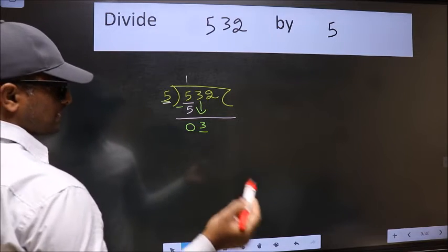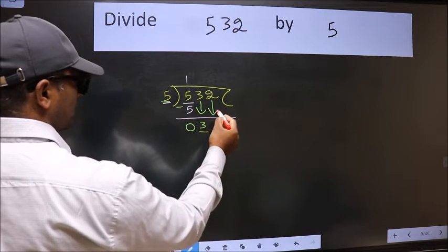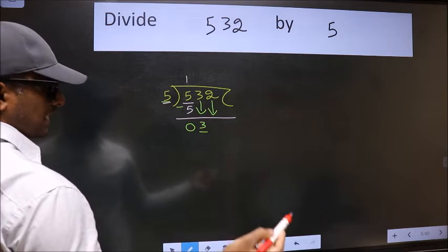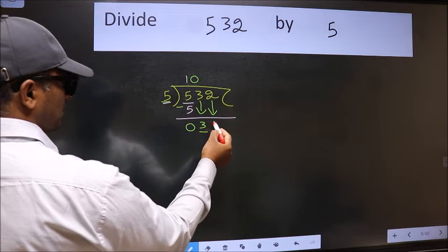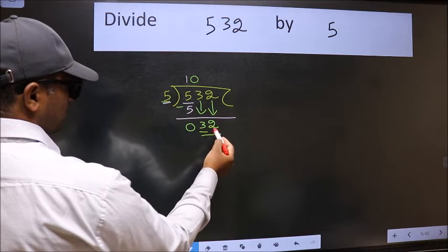So we should bring down the second number. The rule to bring down the second number is we should put 0 here. Then only we can bring this number down. Now, 32.